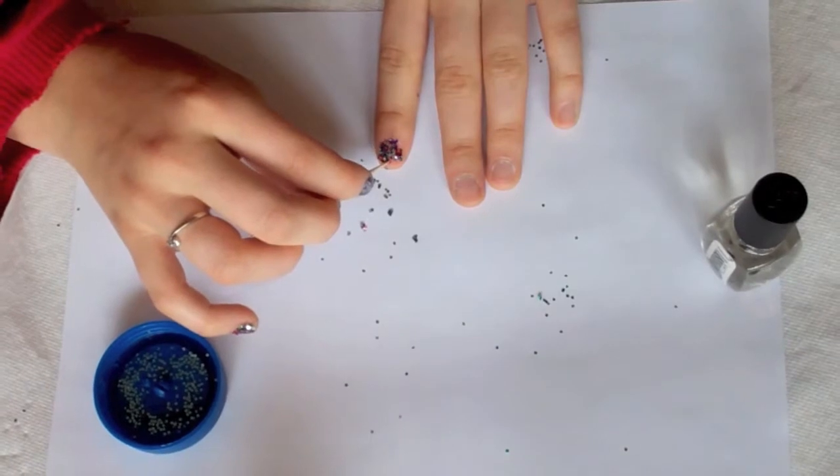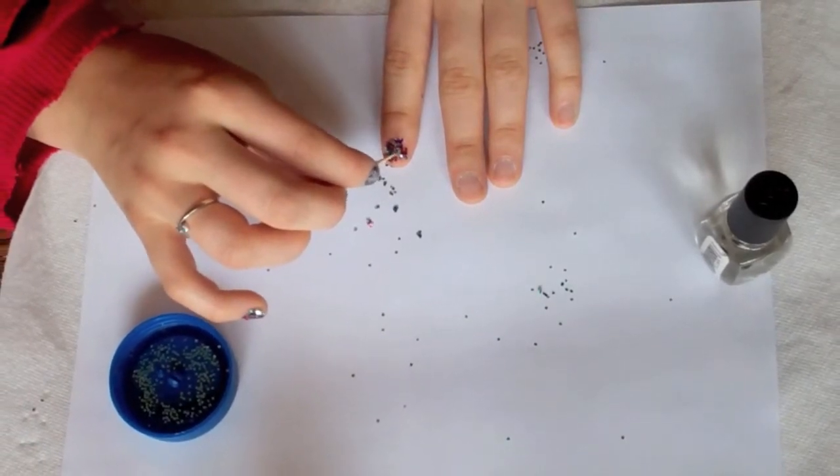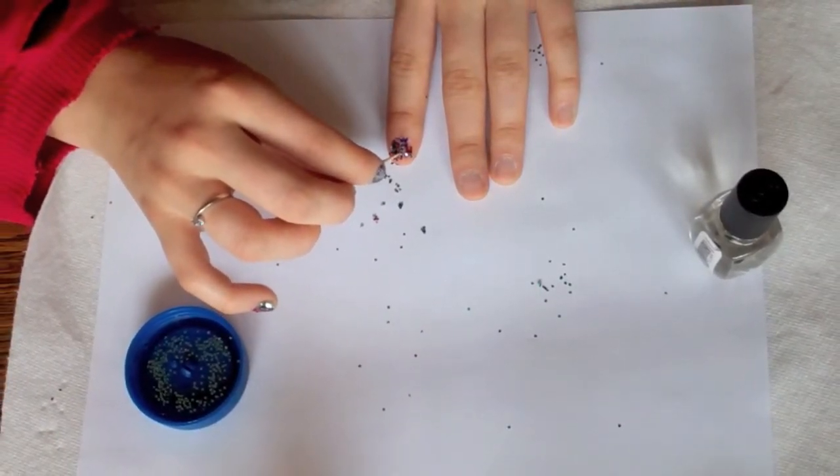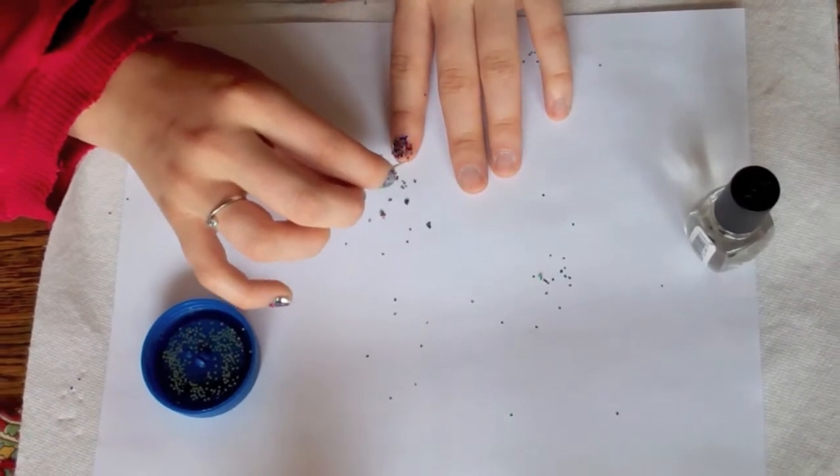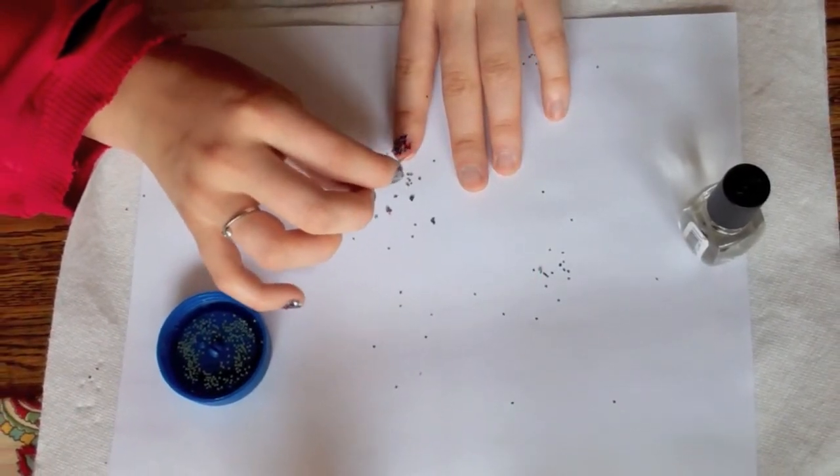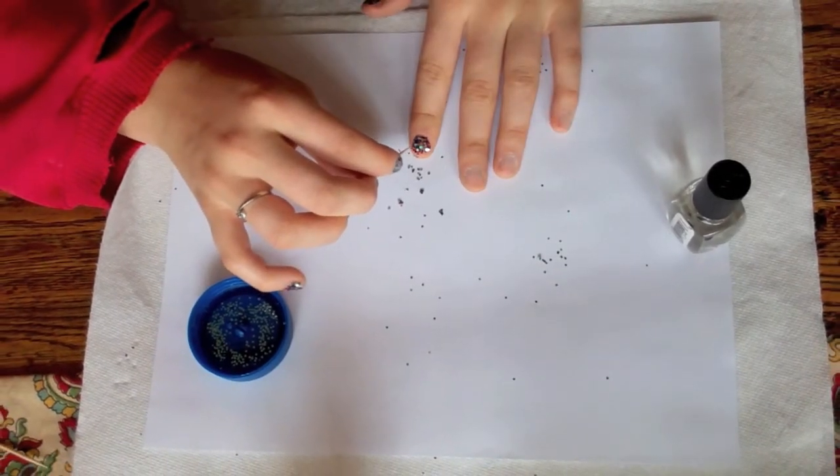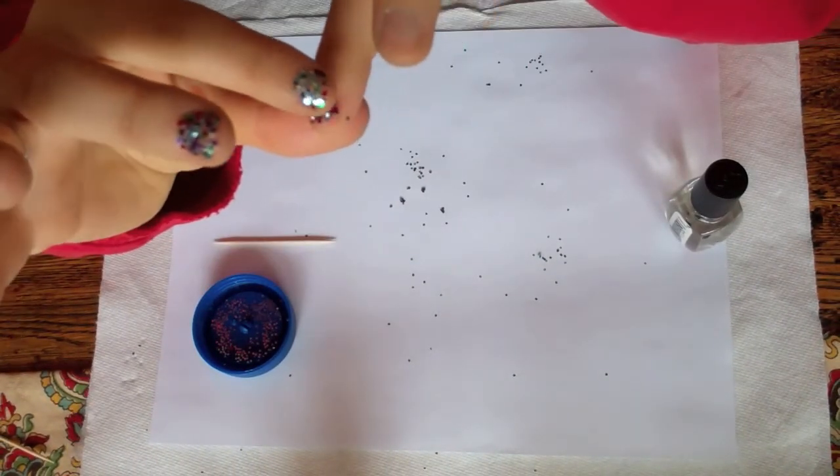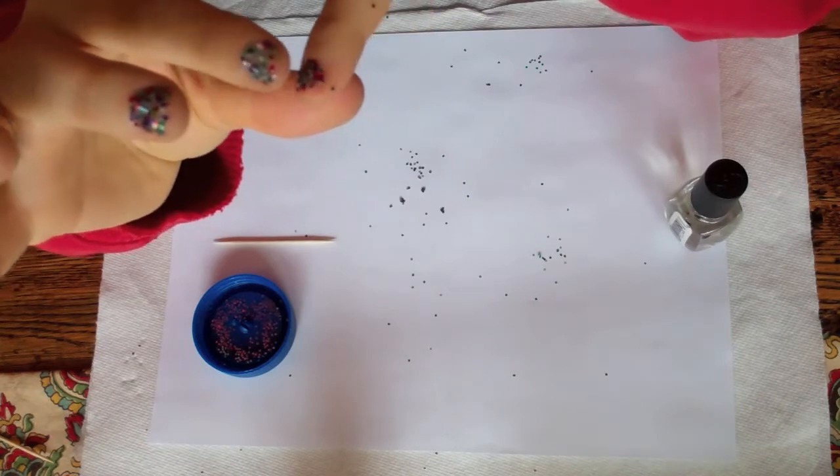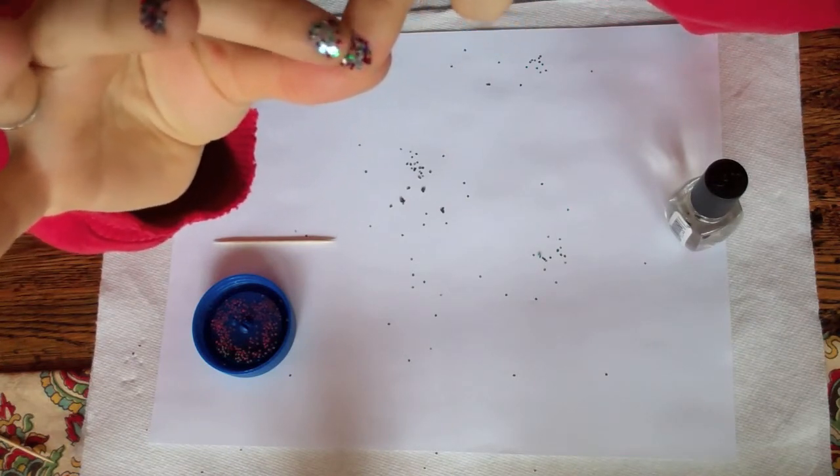This is a close-up of me fixing the glitters on my nails. If you have any bald patches on your nails, just move the glitters around and set them where you want them. Pat down the glitters really lightly, and it's going to make them stick and last a little longer.